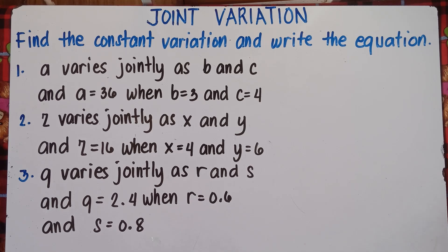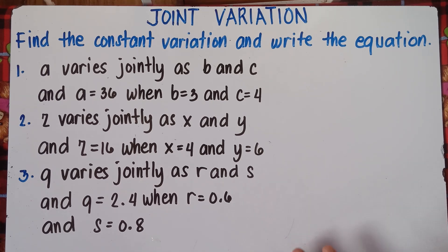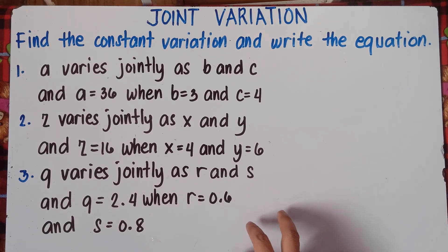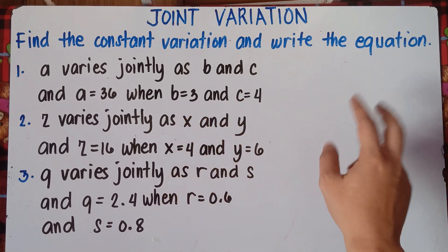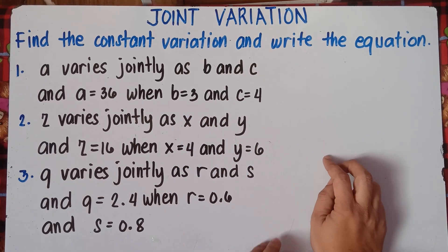We are told to find the constant of variation and to write the equation given the following samples. On the next part of our video on joint variation, we will be solving for the indicated variable — for example, finding x or finding r. But this time, we will just be focusing on finding the constant variation and writing the equation.